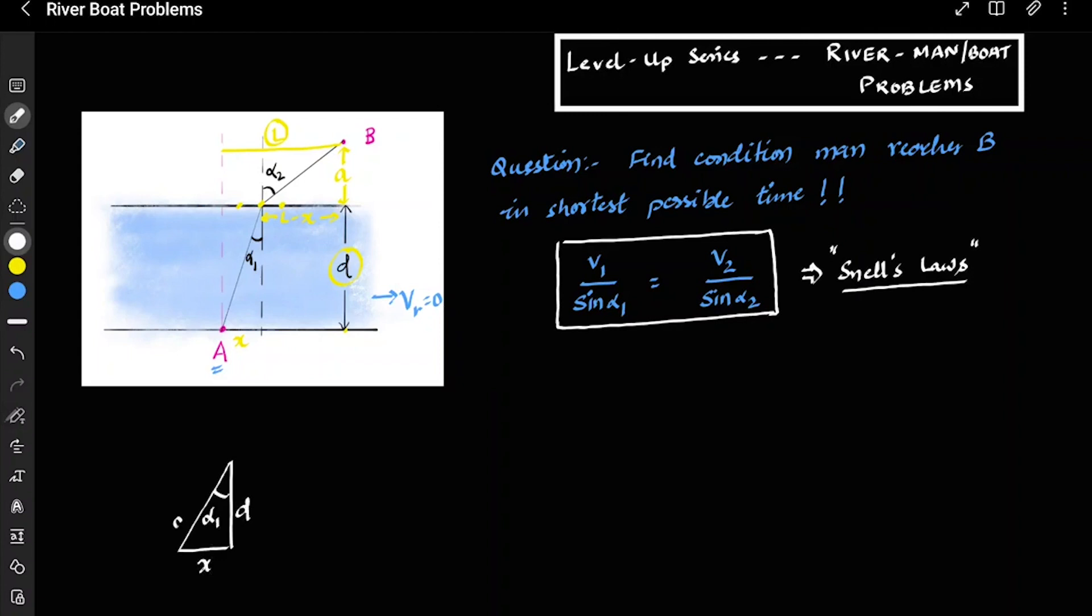The first triangle: this is D, this is x, and this is alpha 1. So this is equal to D square plus x square under root. And in the second triangle...